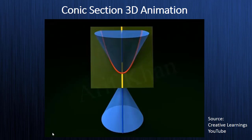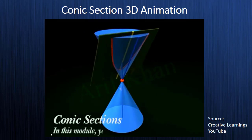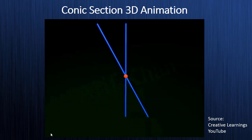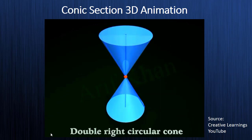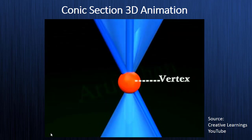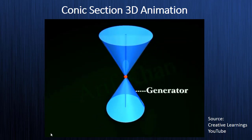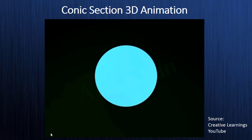In this module you will learn about conic sections. When a straight line intersects a vertical line at a fixed point and rotates about that fixed point, the surface obtained is called a double right circular cone. A double right circular cone consists of two cones joined at a fixed point called the vertex. The line that rotates about the vertex is called the generator, and the line that remains fixed is called the axis.